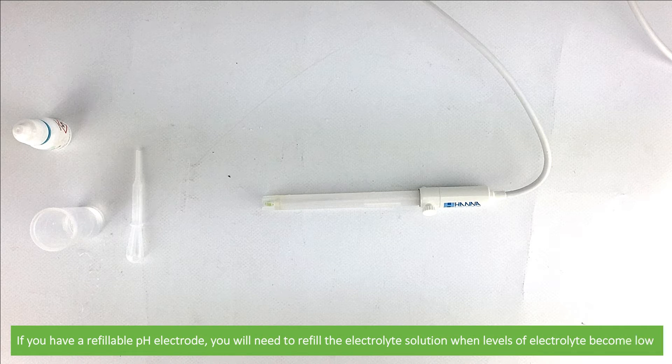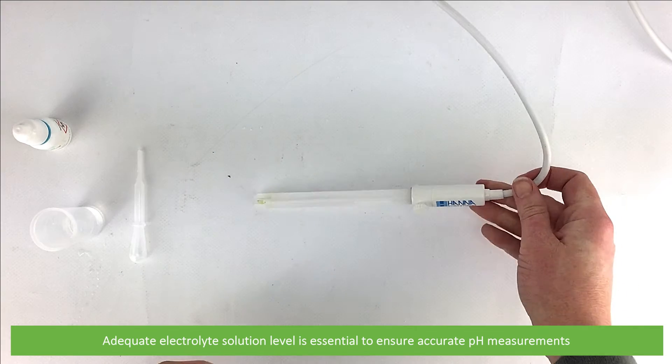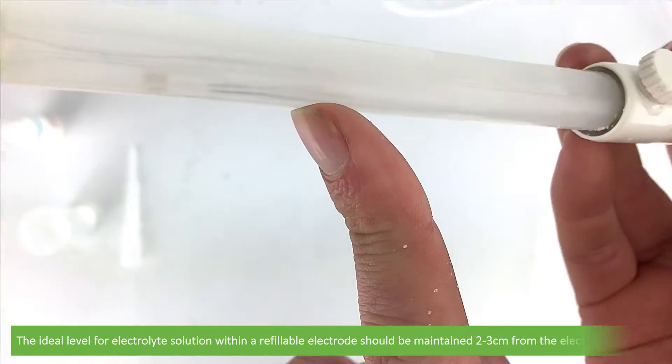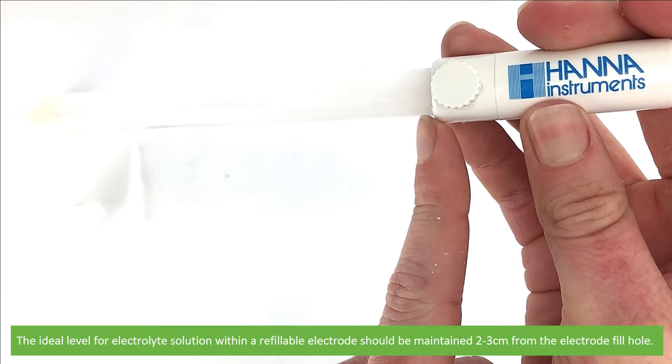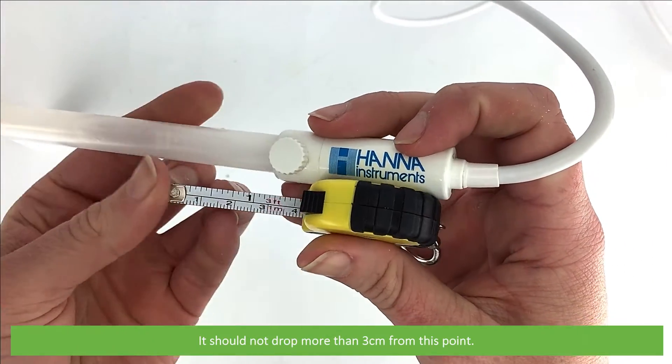If you have a refillable pH electrode, you'll need to refill the electrolyte solution when levels become low. Adequate electrolyte solution level is essential to ensure accurate pH measurements. The ideal level for electrolyte solution within a refillable electrode should be maintained 2-3cm from the electrode fill hole. It should not drop more than 3cm from this point.